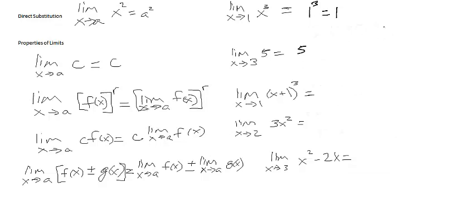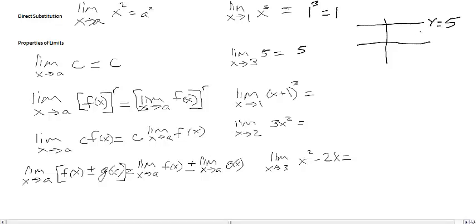If we look at it graphically it makes sense, because we have the function f of x equal to 5, meaning y equals 5. No matter what a value we use, as we go across the function the value is still going to be 5.